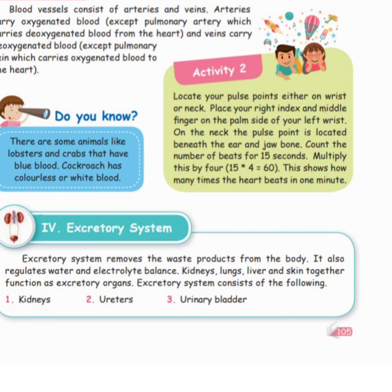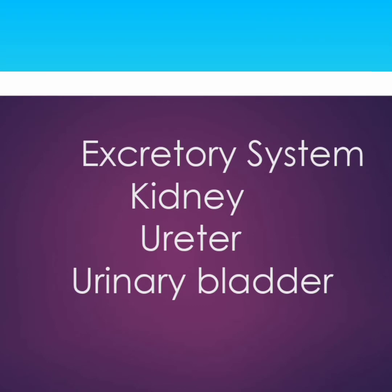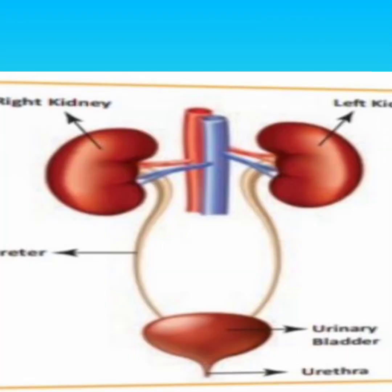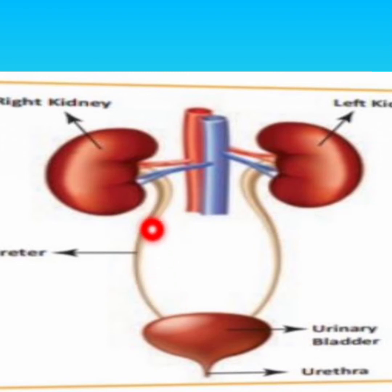Next we will see the excretory system. The excretory system has three parts: kidney, ureter, and urinary bladder. We have two kidneys — right kidney and left kidney. The ureter connects the kidney to the bladder. The bladder is a sac-like structure.